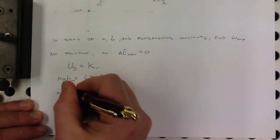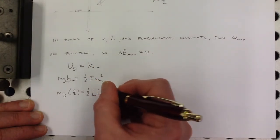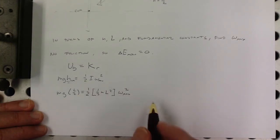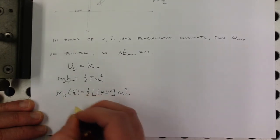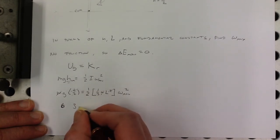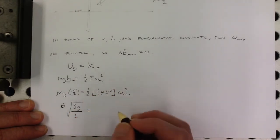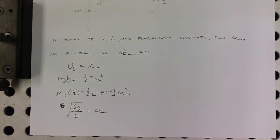So, mg L over 2 is equal to one half. The rotational inertia of a rod about its end is one third mL squared times omega max squared. Simplifying this, my m's cancel out. One of the L's cancels out. The one-halves cancel out. So, 3g over L is equal to omega max. And I square rooted that. So, there you go. That's what it would be.